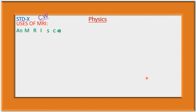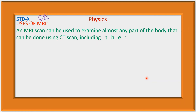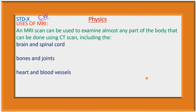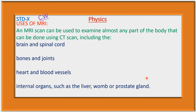An MRI scan can be used to examine almost any part of the body, including the brain and spinal cord, bones and joints, heart and blood vessels, and internal organs such as the liver or prostate gland. Furthermore, the difference between different tissues is more clearly seen by MRI compared to CT scan.